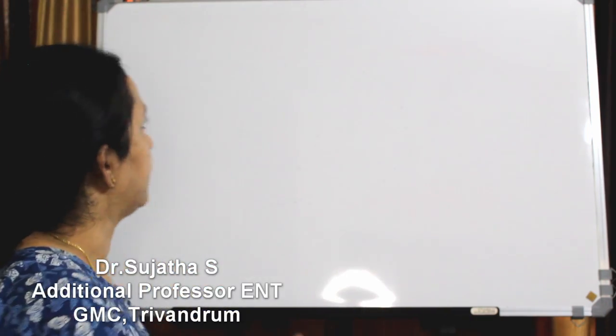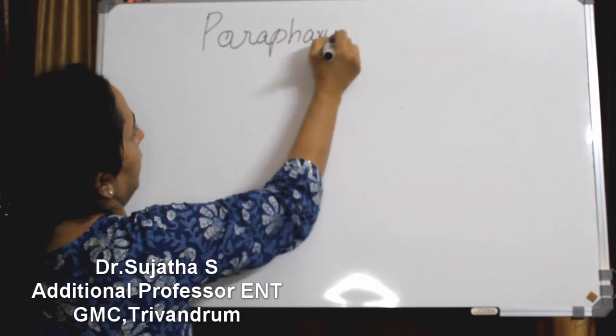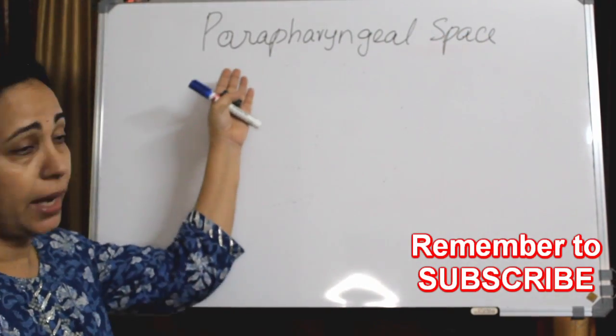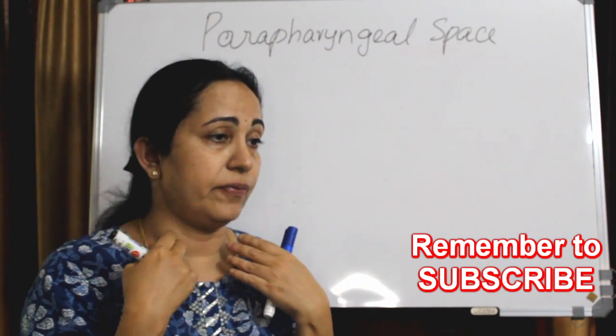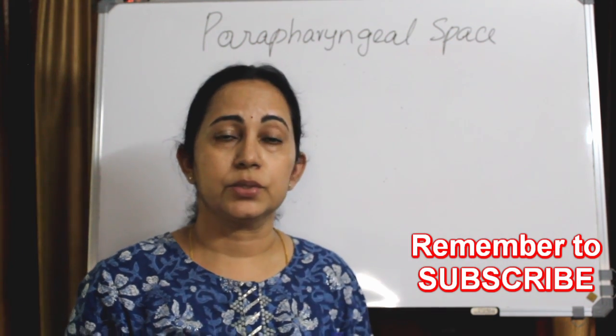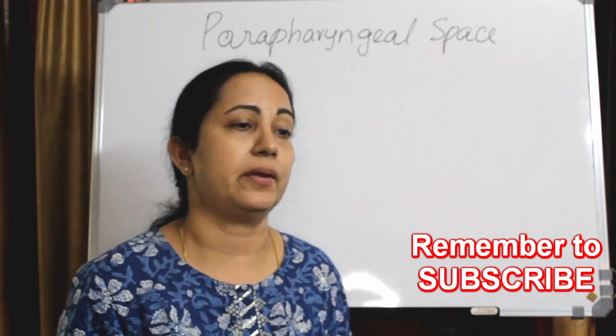In this class, I will explain what the parapharyngeal space is — that is, the anatomy of the parapharyngeal space, its clinical significance, and the approaches to parapharyngeal tumors. Parapharyngeal space — 'para' means parallel to the pharynx. There are two parapharyngeal spaces, one on each side, laterally.